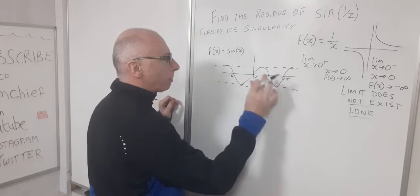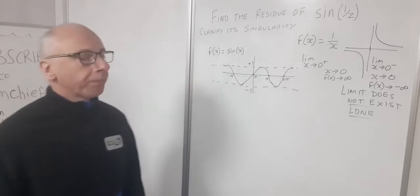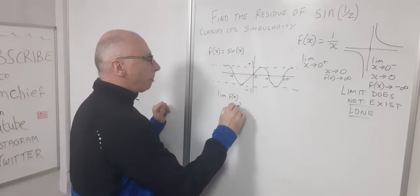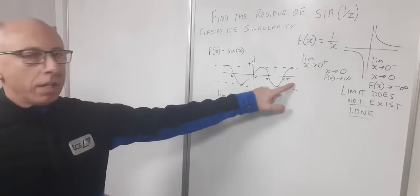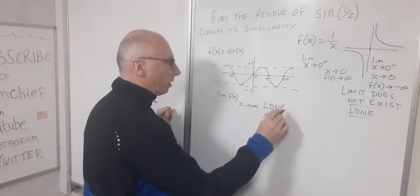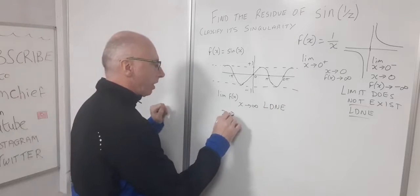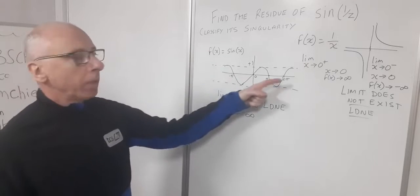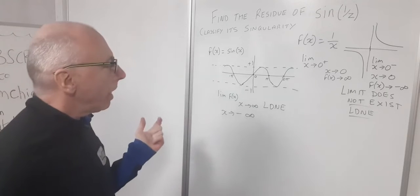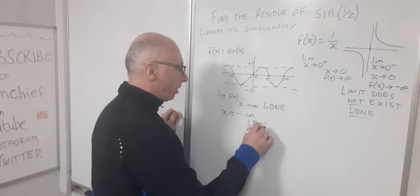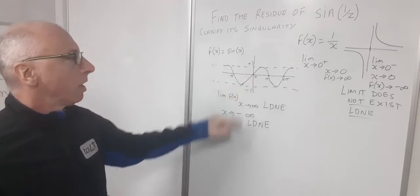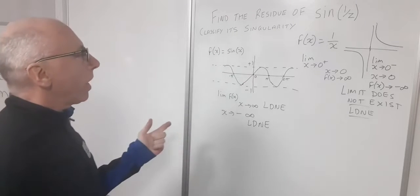The sine function has maximum values of positive one and minus one. The limit of sin(x) as x approaches positive infinity does not exist — it oscillates between minus one and one. Similarly, as x approaches negative infinity, the limit does not exist. However, as x approaches zero, the limit does exist and equals zero.